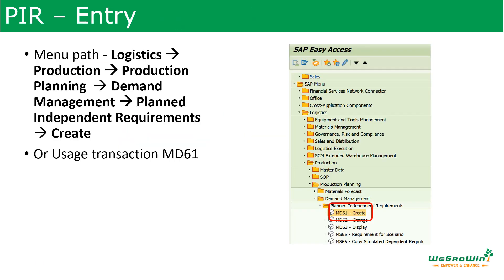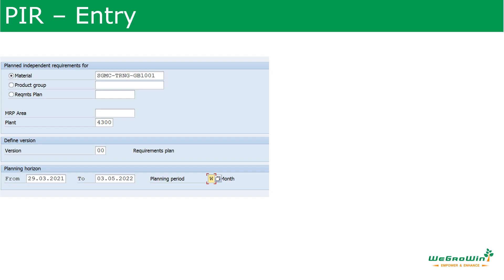Now let us see how demand is entered into the system. Demand is entered using the transaction MD61, or via the menu path shown here. After entering transaction MD61, the system brings us to the demand entry screen.